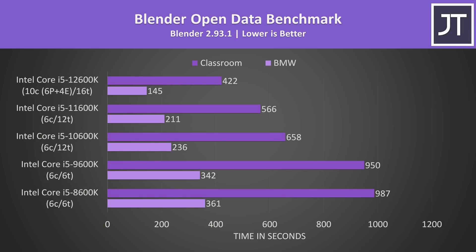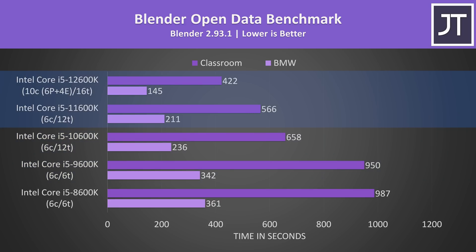Blender was tested with the open data benchmark — another multi threaded workload. The jump between 9th and 10th gen was much bigger because Intel started giving the i5's hyper threading here. 10th gen could complete the longer classroom render 44% faster than 9th gen, while the newest 12th gen still has a healthy 34% lead compared to 11th gen.